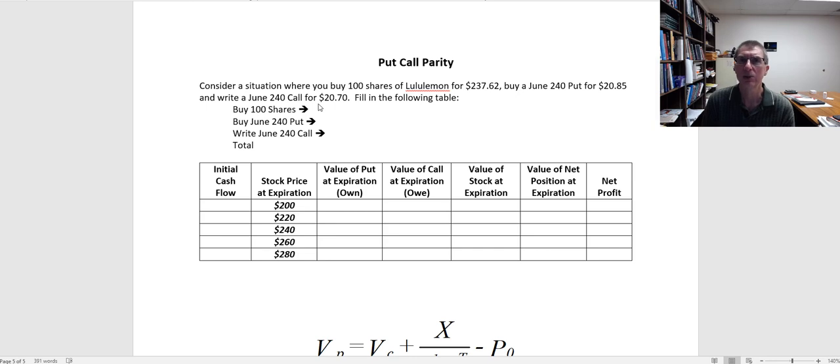Now remember, call option contracts and put option contracts are valid for 100 options per contract. So we're doing 100 shares of the stock, we're buying 100 put options, and we're writing 100 call options. Now it's important that the call and put options both have the same expiration, so we're dealing with June contracts on both of these, and they both have the same strike price.